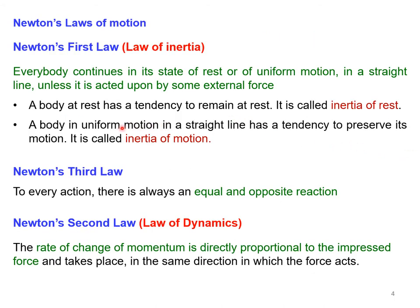Now let us see Newton's laws of motion. We have three laws. Newton's first law is also called the law of inertia. Its statement is: every body continues in its state of rest or of uniform motion in a straight line unless it is acted upon by some external force. That means if there is no external force, a body at rest will remain at rest and a body in motion in a straight line will continue in that motion.